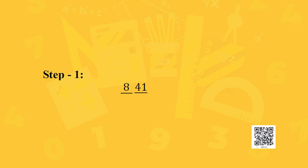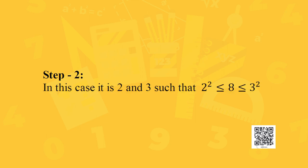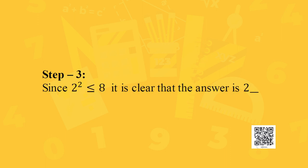In step 1, divide the number into 2 parts by taking the units and tens digits together as one part and the remaining digit as the other. For 841, we place a bar below 41 and a bar below 8. In step 2, find two numbers such that the left part lies between their squares. Here the left part is 8, which lies between 2 squared and 3 squared. In step 3, identify the lesser number — which is 2 — as the first digit of the answer. So the answer will be 2 followed by some digit.